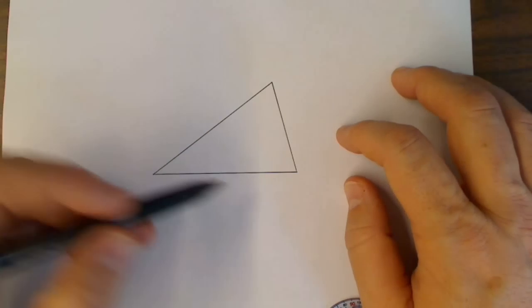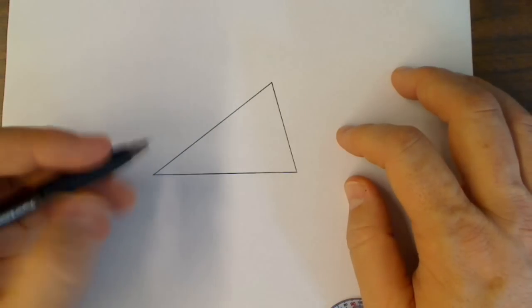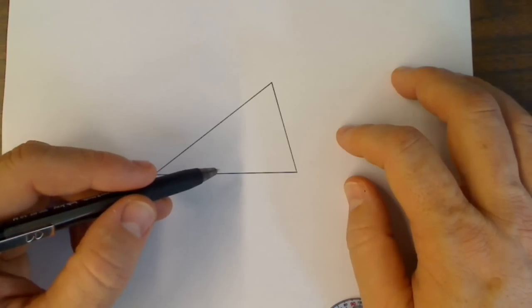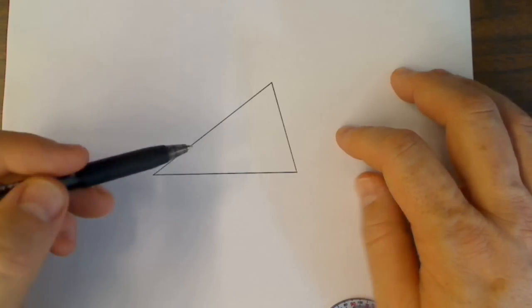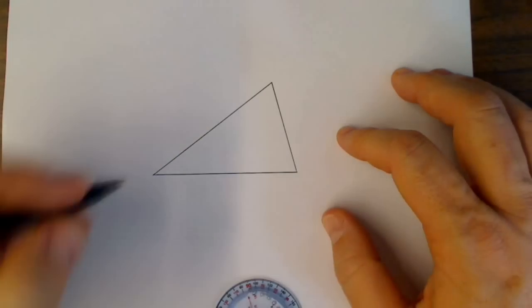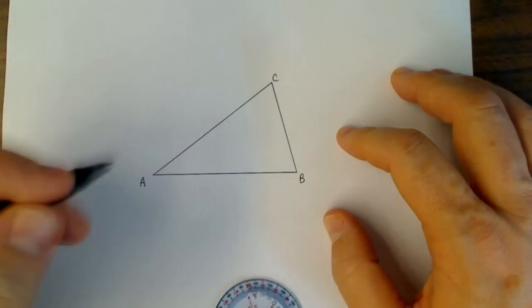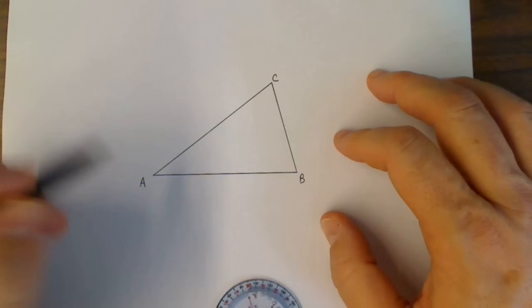Now what we're going to do is construct a circle on the outside. So we want to find the circumcenter of this triangle. In order to find the circumcenter, we're going to do two segment bisectors. I'm going to call this triangle ABC. The first thing I'm going to do is construct the segment bisector for segment AB.